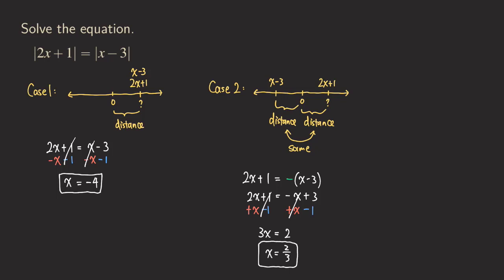You may ask: do we have all the cases already? We're still missing some. When drawing the diagram, I was assuming that both two x plus one and x minus three are on the right side of zero — meaning they're positive numbers. But do they have to be positive? They can both be negative numbers. If we plug negative four back in, we get negative four minus three equals negative seven, and two times negative four plus one also equals negative seven. So the picture was really just an idea to set up the equation, but it may not be entirely accurate.